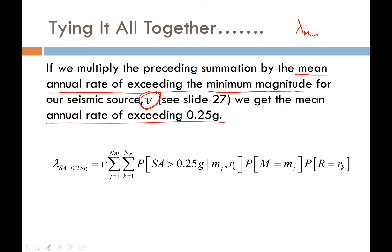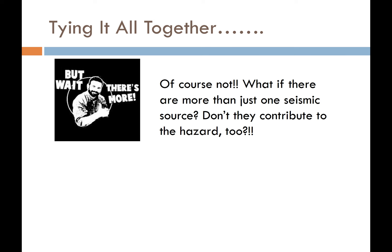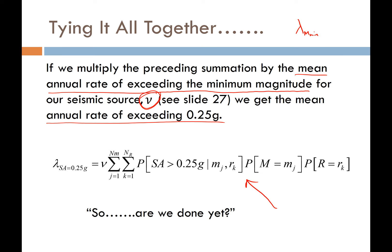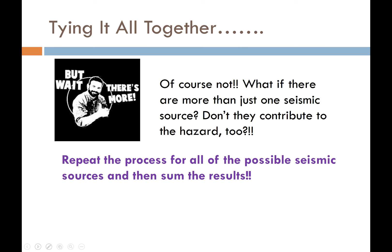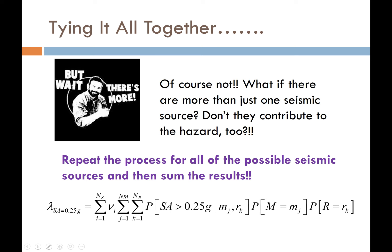What if there are more than one seismic source? The previous equation is only for one fault. If we have multiple faults around our site, we repeat the process for every seismic source, iterating through every possible combination of magnitude and distance for each source and computing the probabilities of exceeding 0.25g. The generalized equation adds an outer summation representing the number of seismic sources.